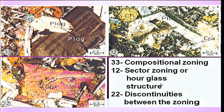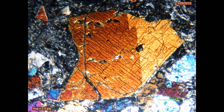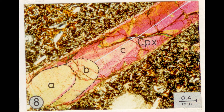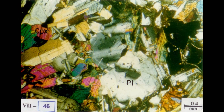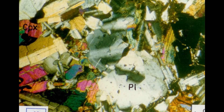Discontinuities in zoned structures are also present. This is a large plagioclase crystal — more calcic in nature at the core. When analyzed with a microprobe, the periphery is less calcic and more sodic. There are discontinuities and sectors in the zoned structure. When you rotate the microscope stage, half of the sector becomes dark while the other sector becomes illuminated, and vice versa. This kind of zoning is known as sectoral zoning, better known as hourglass structure.